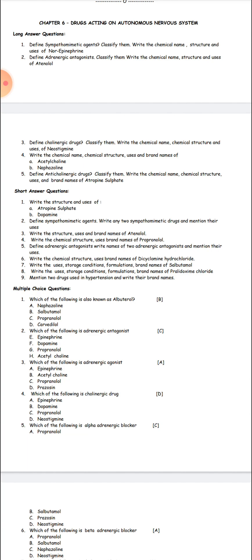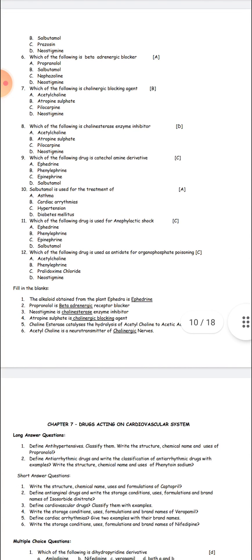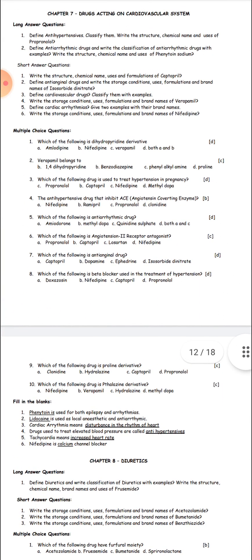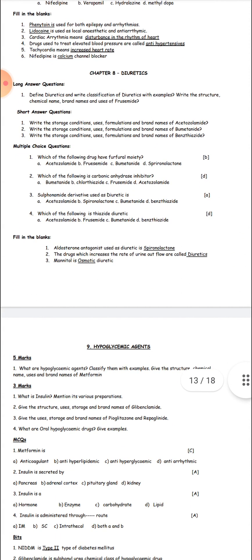Drugs acting on the ANS, drugs acting on the cardiovascular system, and diuretics are covered in chapter number eight. There is one 5-mark question and three 3-mark questions. The remaining questions are match the following and multiple choice questions.